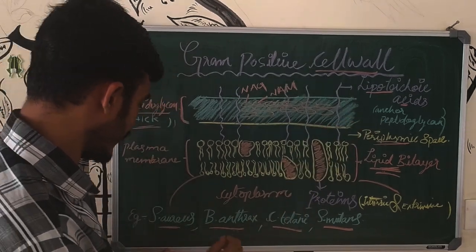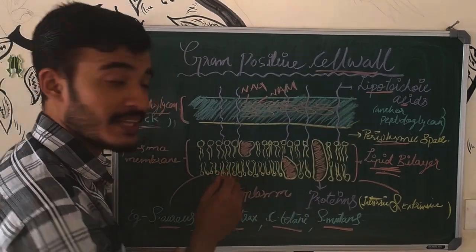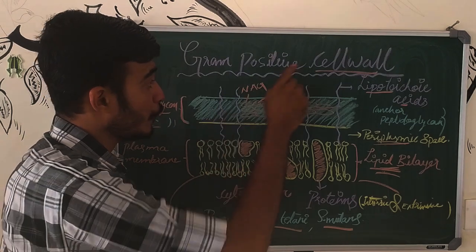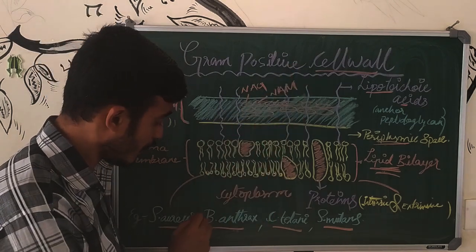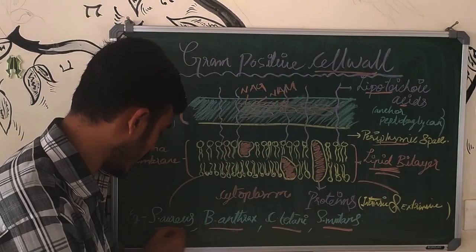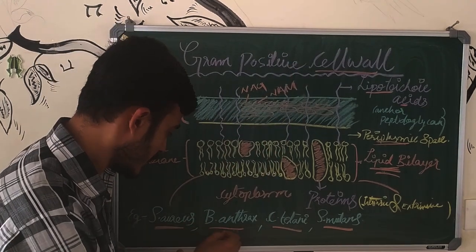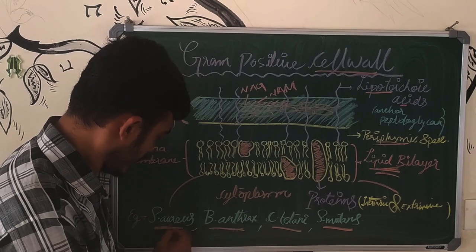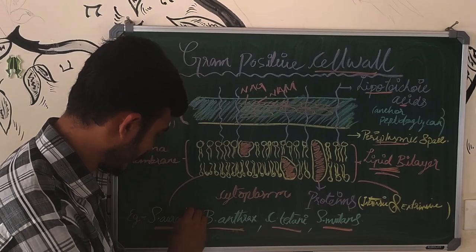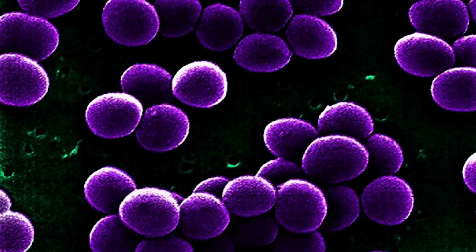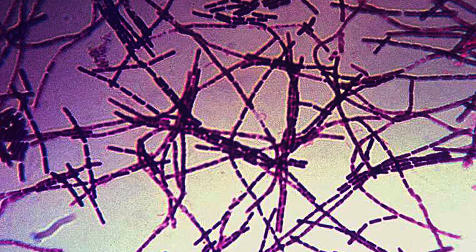Now, we have to use this gram-positive cell organism. We use this organism — we use Staphylococcus aureus. It is gram-positive. That is called Bacillus anthracis — that is anthrax.